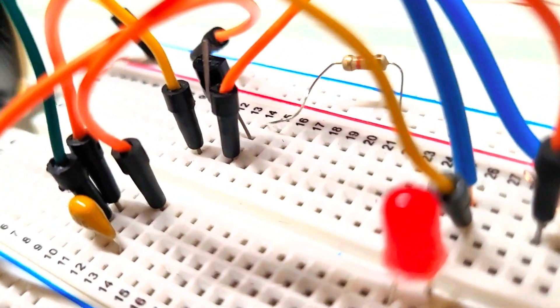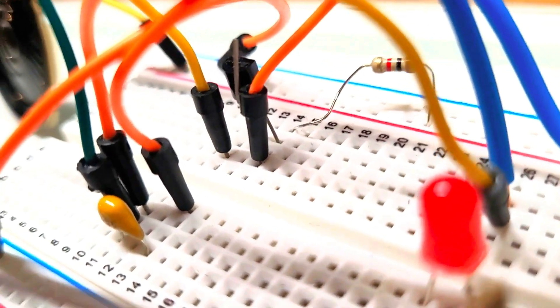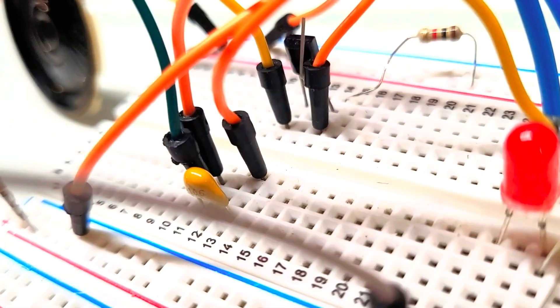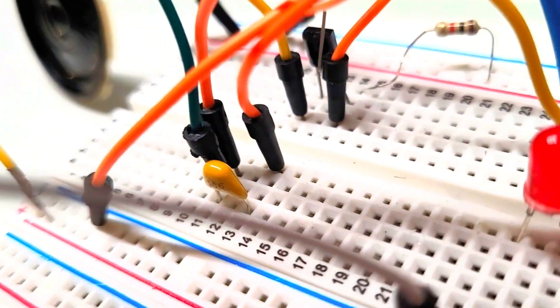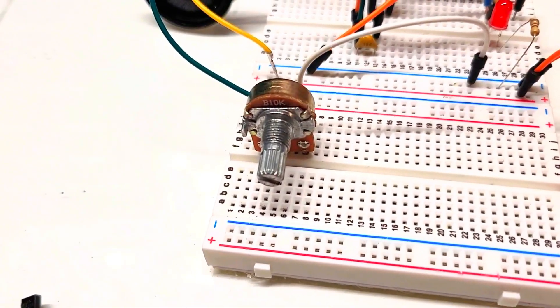Another thing before we turn this on: you might notice that this circuit only has two of the transistor legs used, which is a tiny bit odd, but it's repurposing this transistor as an oscillator. Right, enough talking, let's get this thing on.